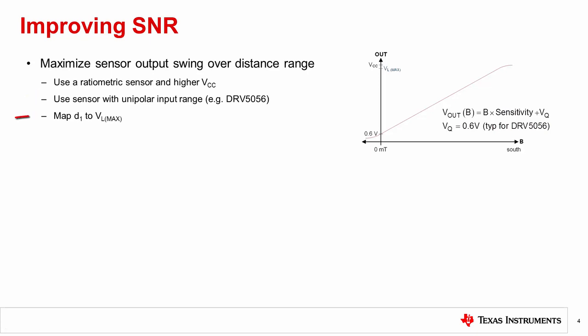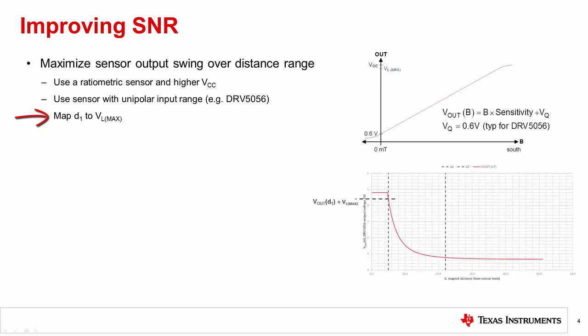You can also select a magnet that maps D1 to VL max, which is the upper limit of the sensor's linear output range. This is to make sure the full-scale distance range maps to larger signal levels that are easier to resolve.